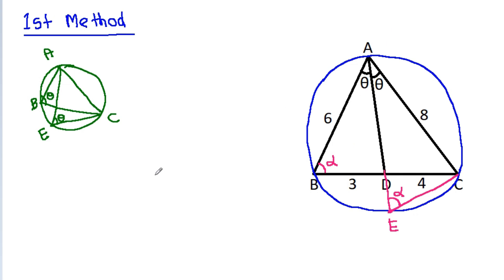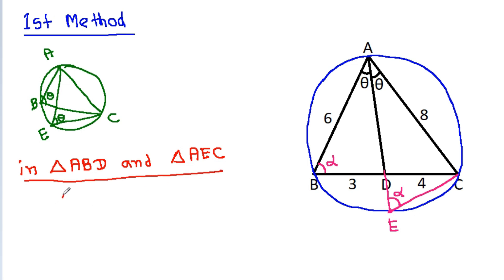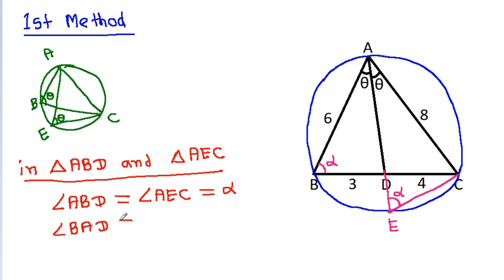And now, in triangle ABD and triangle AEC: angle ABD is equal to angle AEC, that is alpha. And angle BAD is equal to angle EAC, that is theta. So, by angle-angle similarity.